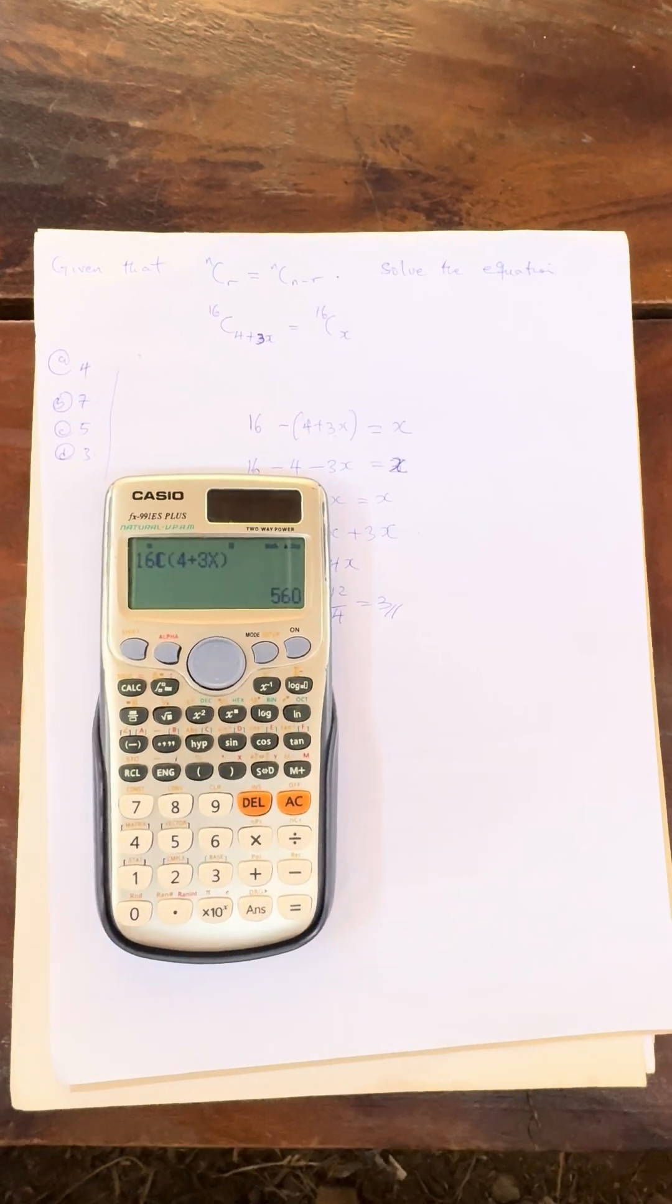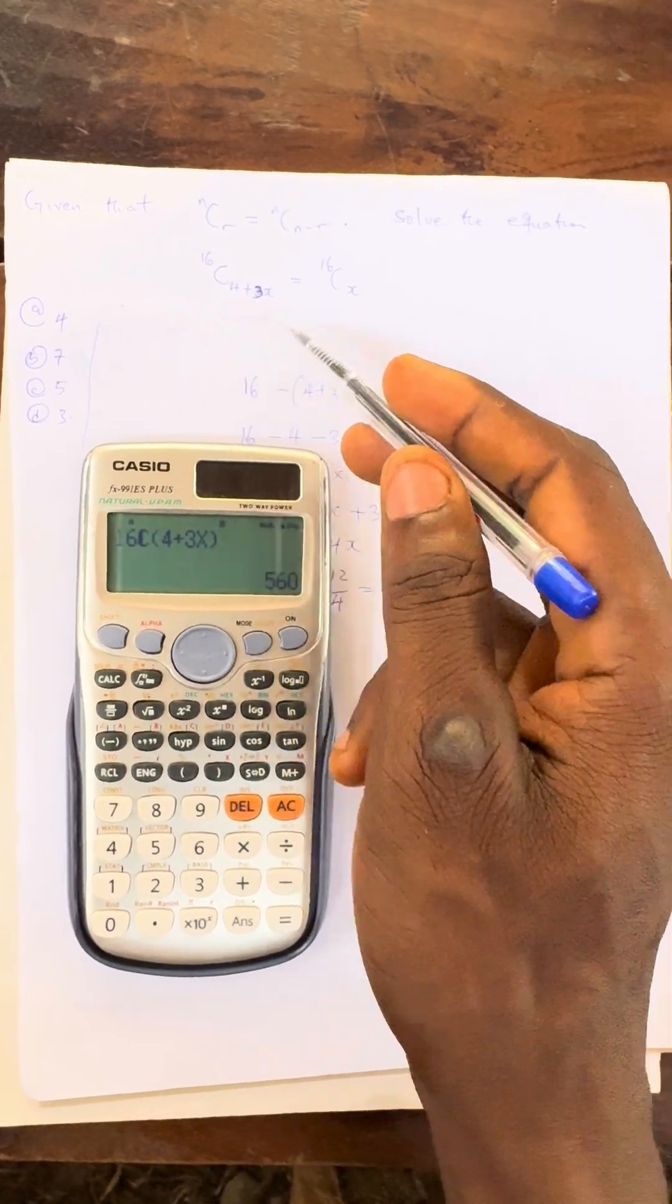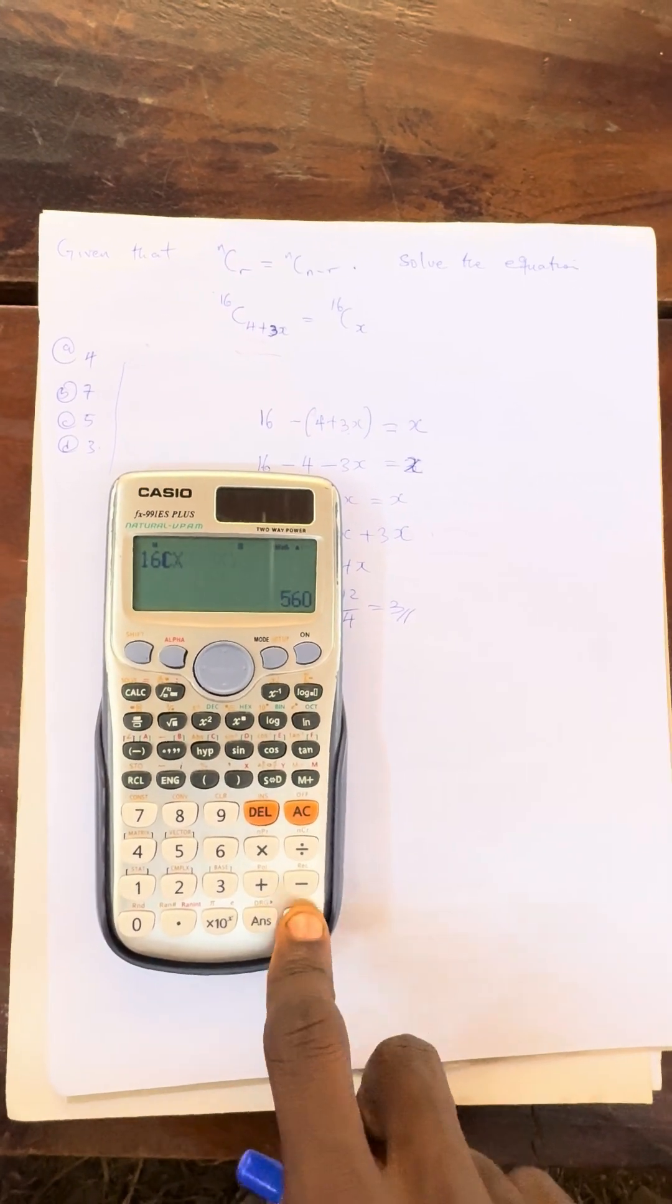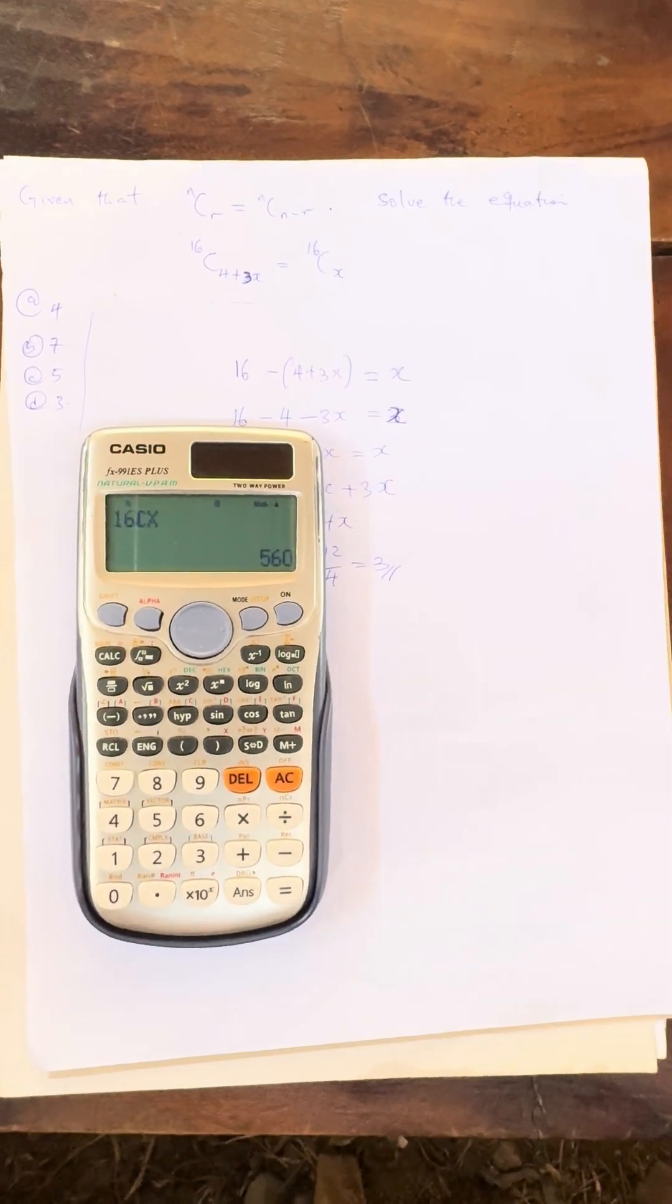Option D. Let's see, you have 3, press equals to. Now can you see that when I use 3, the answer for the left side is 560. Let's press equals to again. Can you see that the answer for the right side as well is 560?